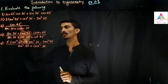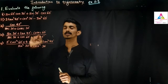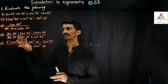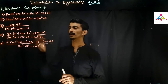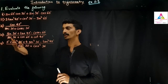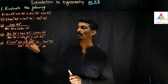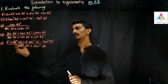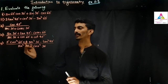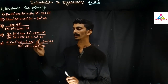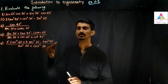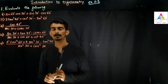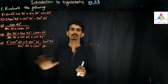The third question is cos 45° divided by (sec 30° + cosec 30°). The fourth is (sine 30° tan 45° − cosec 60°) divided by (sec 30° + cos 60° + cos 45°). The fifth is (5 cos² 60° + 4 sec² 30° − tan² 45°) divided by (sin² 30° + cos² 30°). These are all five questions.